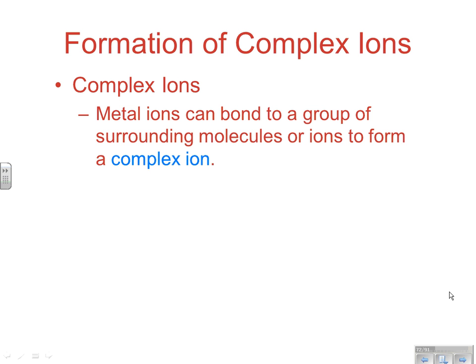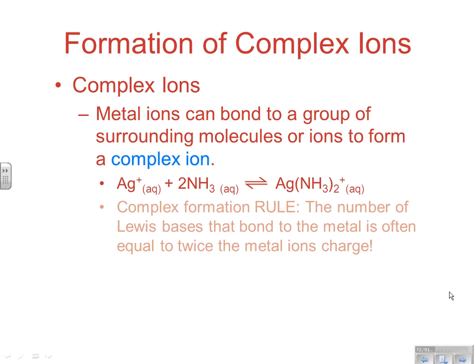Metal ions can bond to a group of surrounding molecules or ions to form what's called a complex ion. What we're usually looking at here is something like silver plus one can react with ammonia to make a complex. It's a large ion formed by the nitrogen coming in with its unshared pair. Remember, have pair, will share. That's a Lewis base. So ammonia is acting like a Lewis base here, sharing those electron pairs with the silver, forming a new substance.